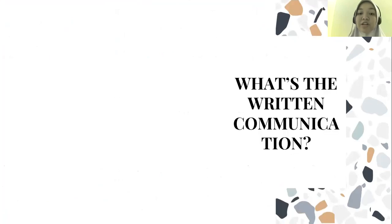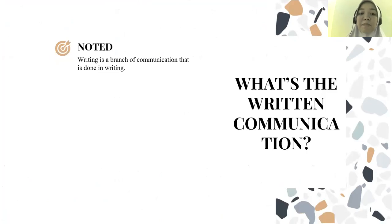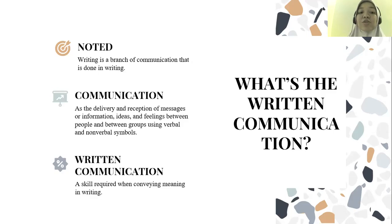The Industrial Revolution has brought changes in various fields, one of which is literature — namely writing and communication. These two words are closely related. Writing is a branch of communication done in writing. Communication can be defined as the delivery and reception of messages, information, ideas, and feelings between people and between groups, using verbal and non-verbal symbols. Communication is divided into two types: oral and written communication.